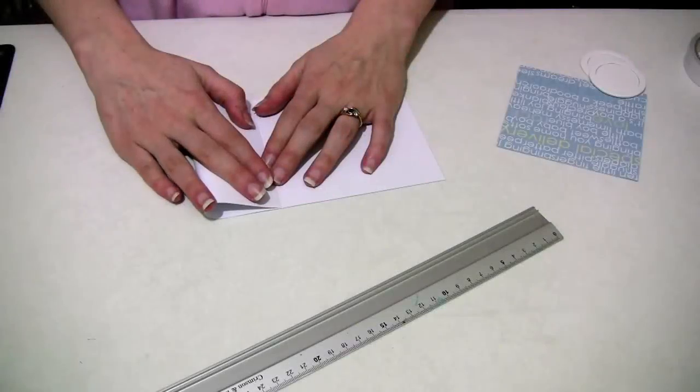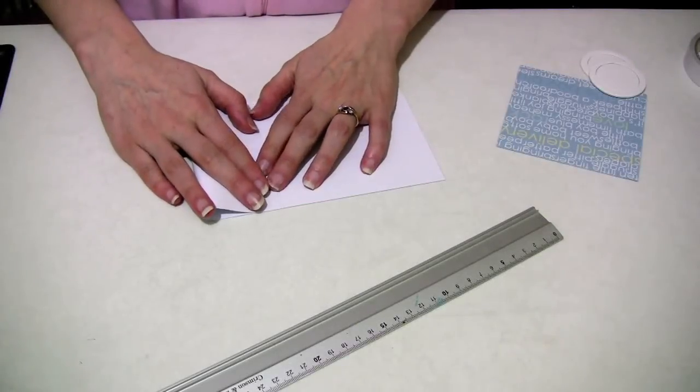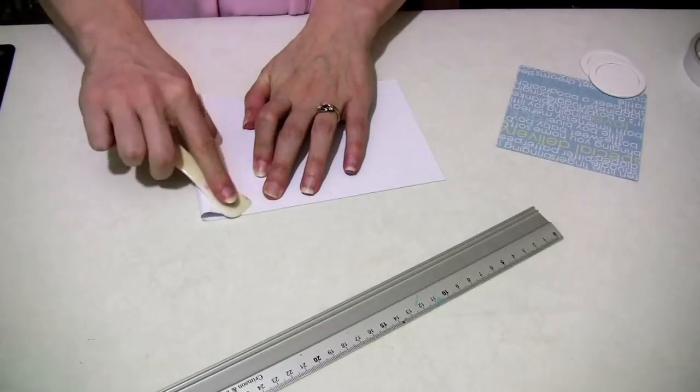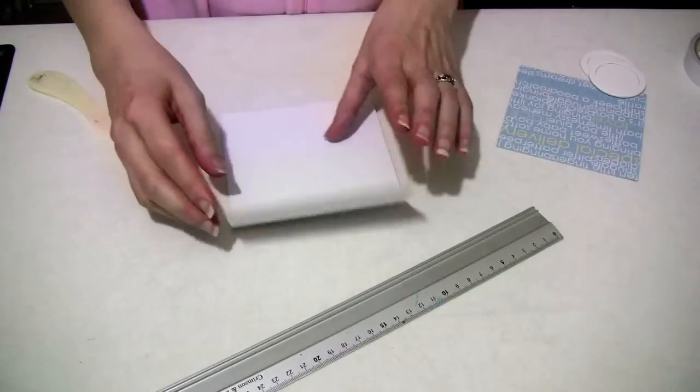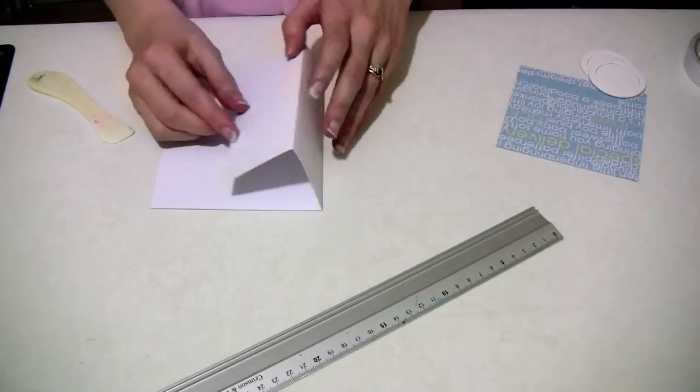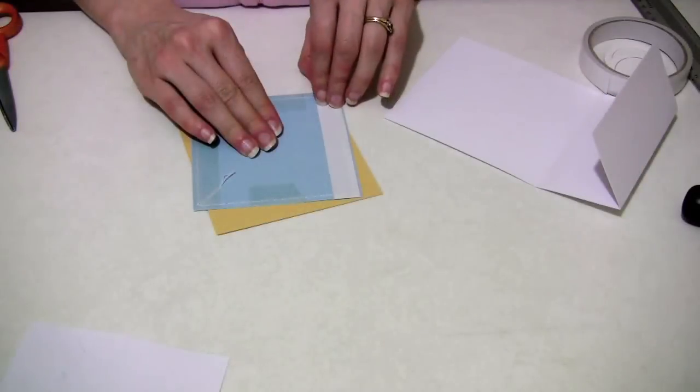Now as this is an easel type card, I'm going to start with a square card blank and on one of the sides I'm going to fold the edge in to meet the center so you get this tent-like fold.